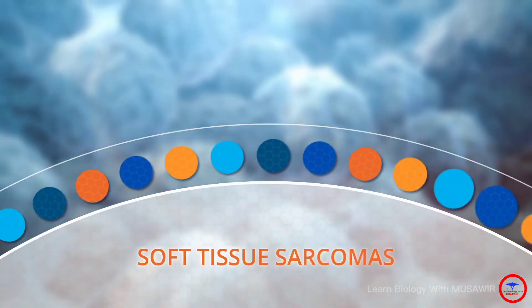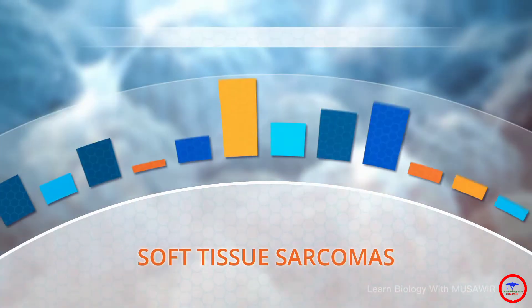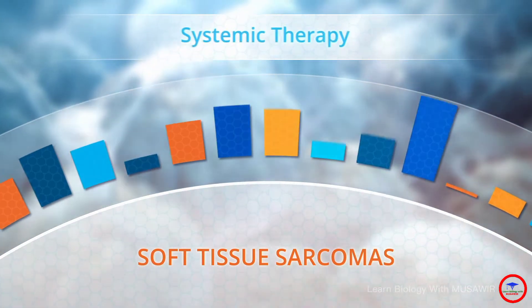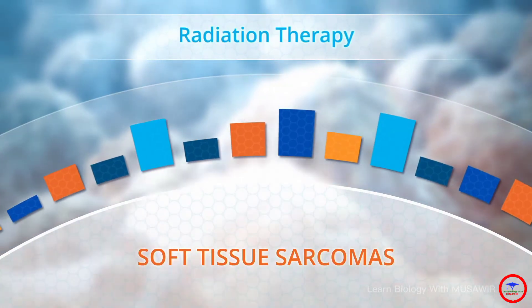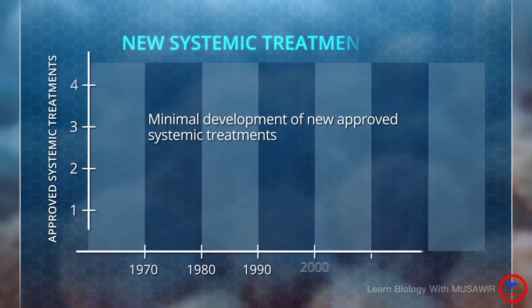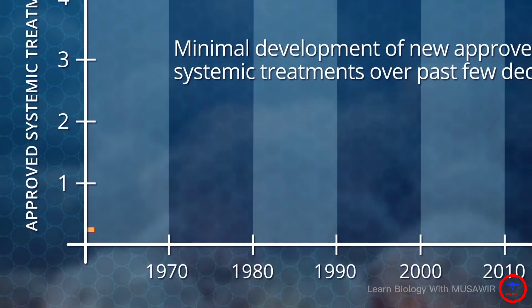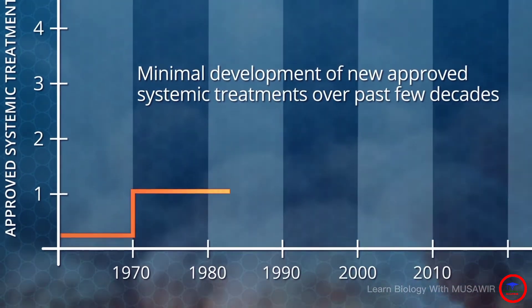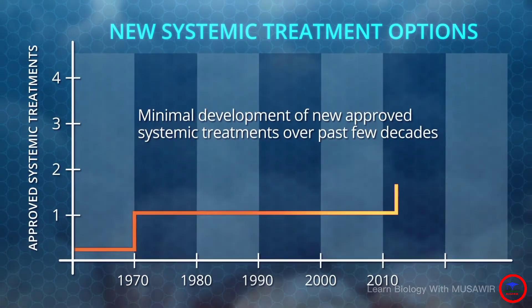The heterogeneity of soft tissue sarcomas presents significant treatment challenges as different subtypes and histological grades have different responses. Over the past few decades, with the exception of GIST, there has been minimal development of new approved systemic treatment options for soft tissue sarcoma.